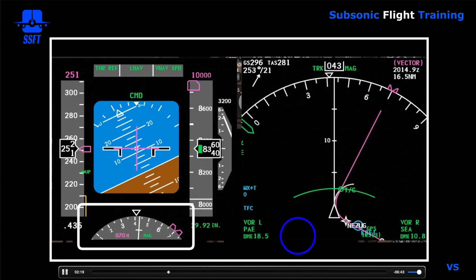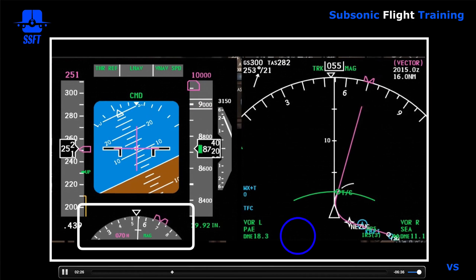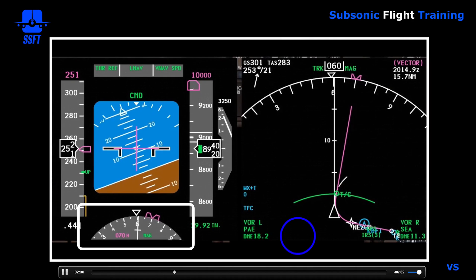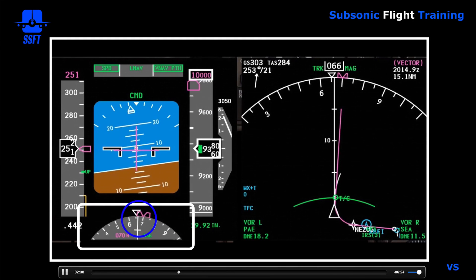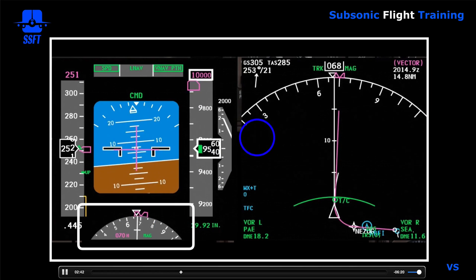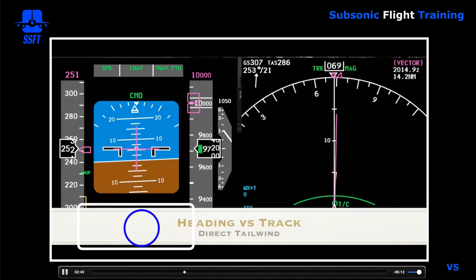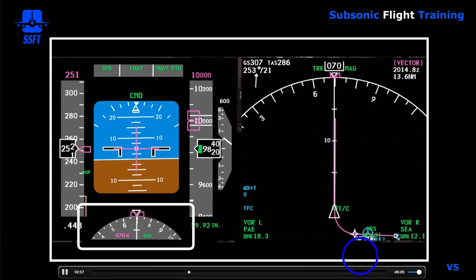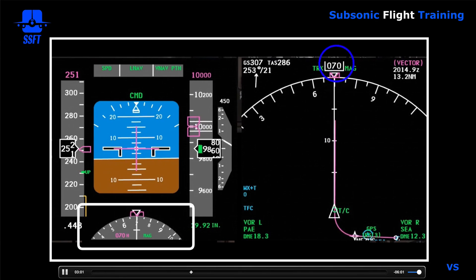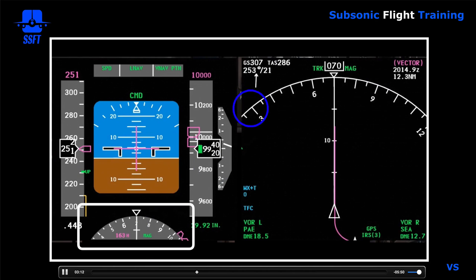As we continue the turn to 070 — as per the SID departure — you'll notice that the wind component now becomes a direct tailwind. As a result, you'll start to see the heading and the track line up again, because there is very little or no difference between them. Once it becomes pretty much a direct tailwind, you're not going to see much difference between heading and track. The white track line is lined up with the upside-down triangle on both the PFD and the ND.